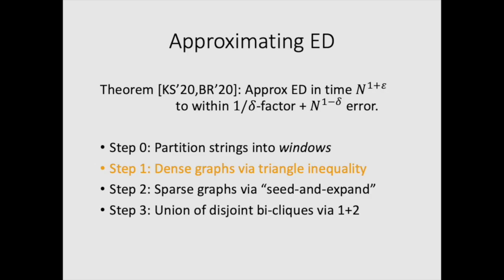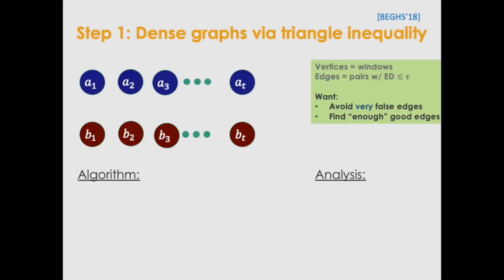Now that we've discussed the abstraction of breaking into windows, we'll now understand some optimizations we can do in this model. The first is essentially what's going to be the dense case. So just recall the setup, we have this bipartite graph, we have some method of querying edges, and we want to find enough good edges.